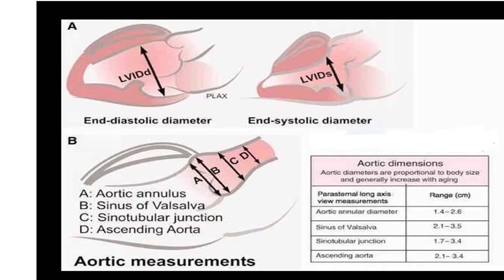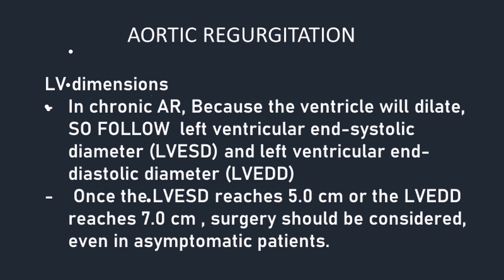Two other very important dimensions are the left ventricular end-diastolic diameter (LVEDD) and the left ventricular end-systolic diameter (LVESD). In patients with chronic aortic regurgitation, the left ventricle will dilate, and we must follow changes in these values. Once the LVESD exceeds 5 cm, or the LVEDD reaches 7 cm or more, surgery should be considered even if the patient is asymptomatic.